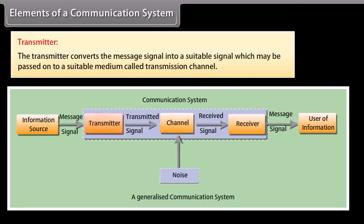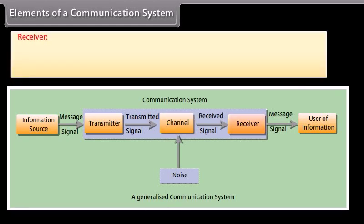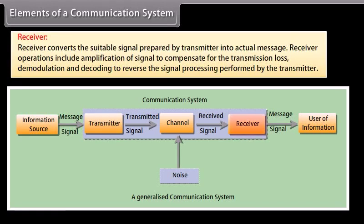The transmitter converts the message signal into a suitable signal which may be passed on to a medium called the transmission channel. The transmission channel is the medium that carries the message in the form of a suitable signal from one place to another. Every channel involves loss of energy during transmission.